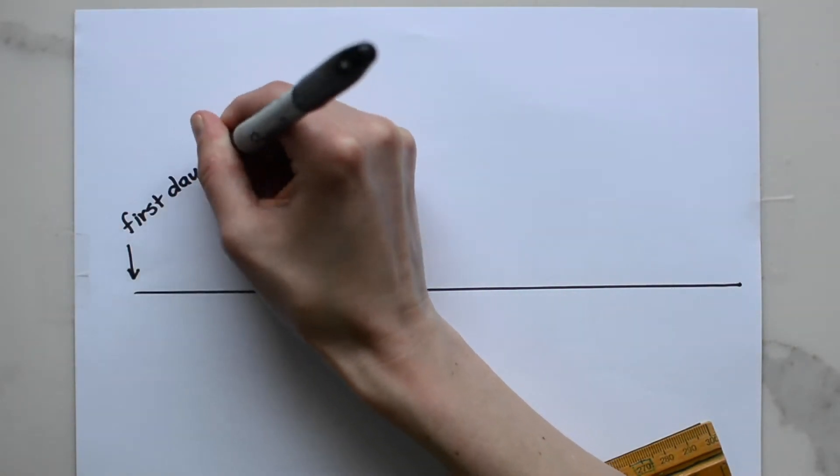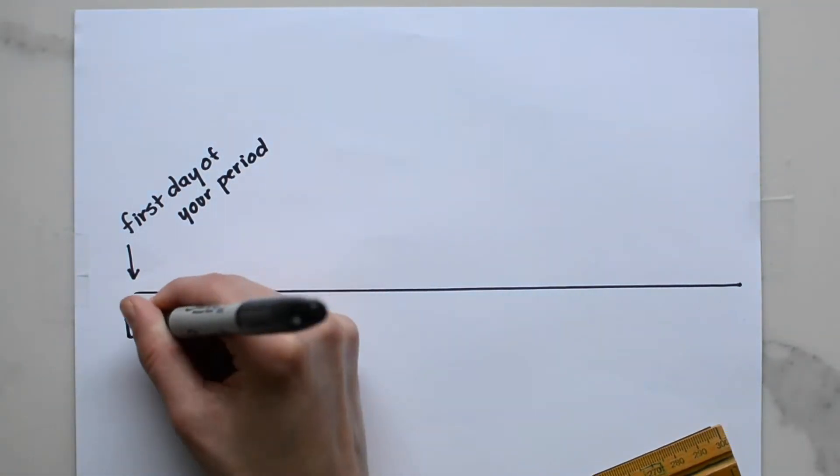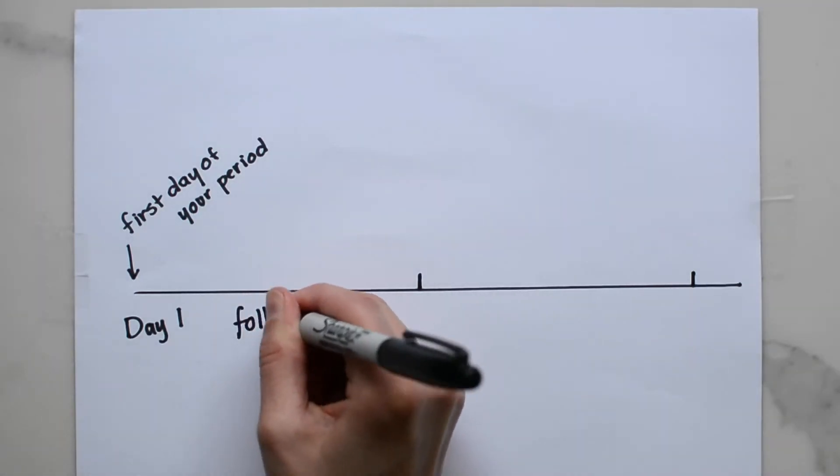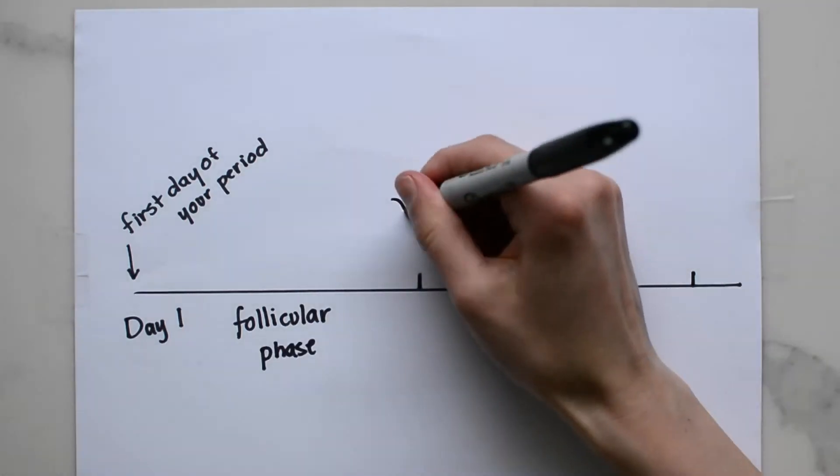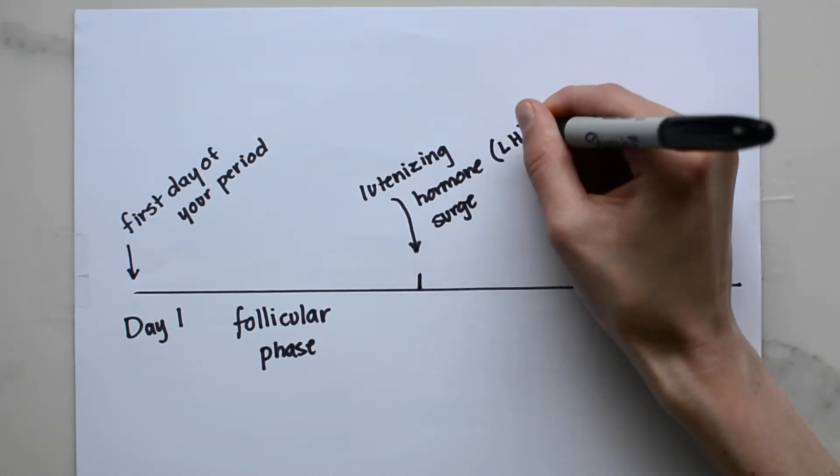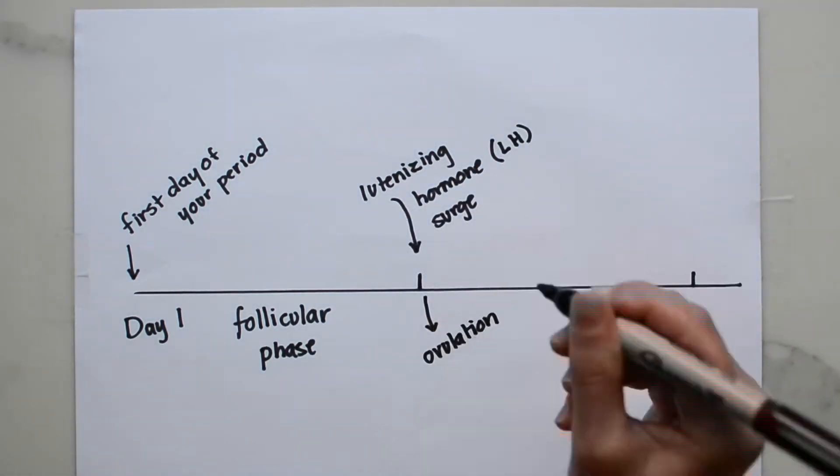By convention we call the first day of your period day one of the cycle. The cycle is divided into two phases. The follicular phase which begins with the onset of your period and ends on the day before the luteinizing hormone surge, right before ovulation.